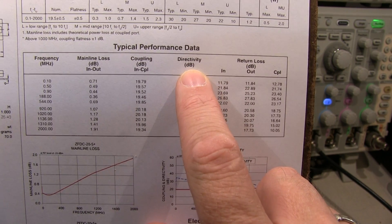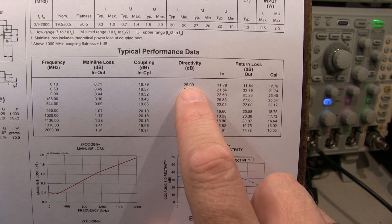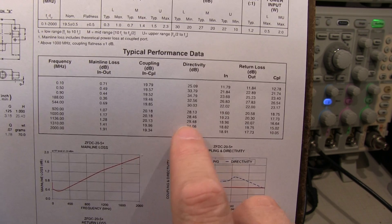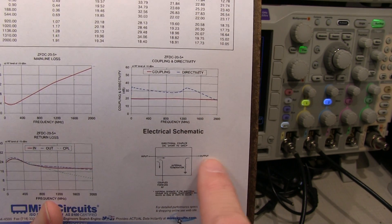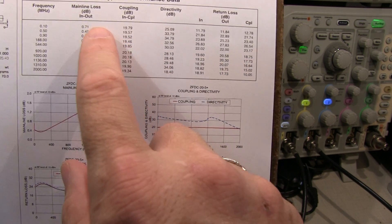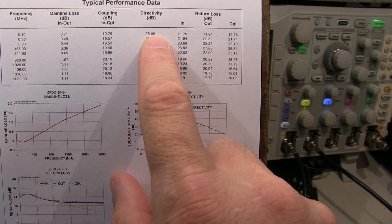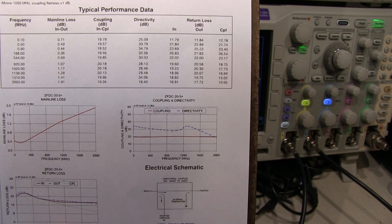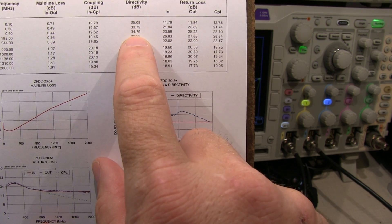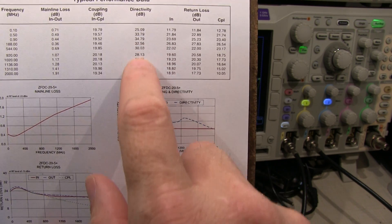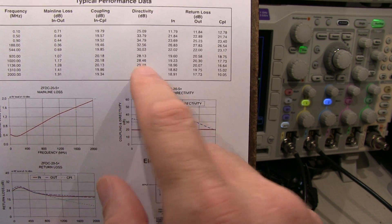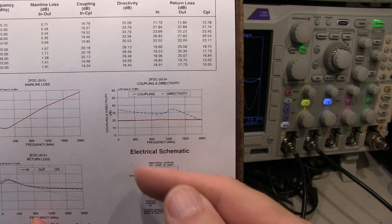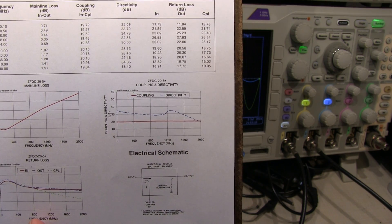So the next spec to talk about is directivity. Directivity is how many dB down the coupled port output will be compared to this value when the signal is going in the opposite direction. So you really would almost want to add up these two values, the coupling and directivity, if you want to figure out what to expect out of the coupled port when you send power in the reverse direction. So you can see here I've got numbers 25, 33, 34, in the 30, 35 dB range of directivity. So that for the reverse power, we'd have that 30, 35 dB plus the 20. So we're going to be down about 55 dB in the reverse direction. So that's a lot of attenuation. So let's take a look at that on the scope.